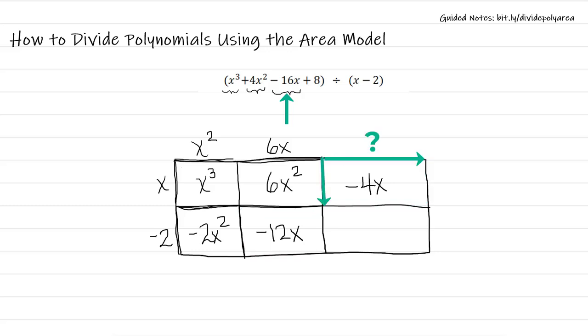Now x times what is going to give me a negative 4x? Well, that's a negative 4. Moving down to this last part, negative 4 times negative 2 gives me an 8. And there is the representative of 8.